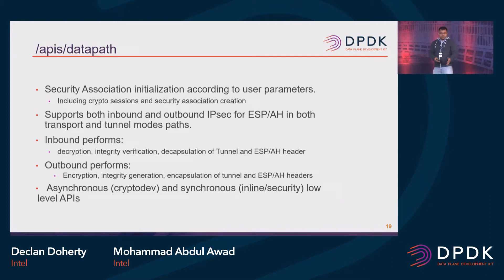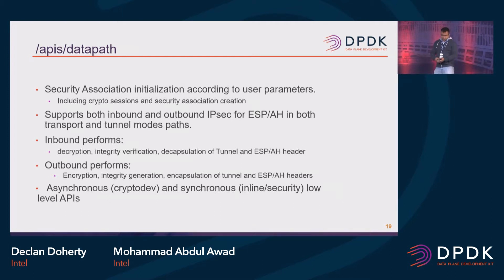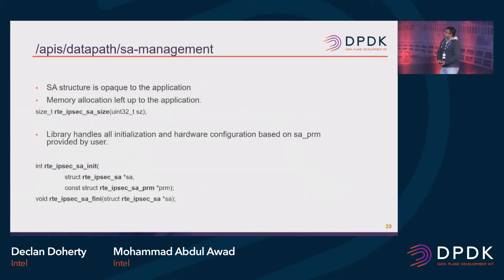In the data path, at the SA-level API, we categorize them: for look-aside crypto we call it an asynchronous API, and then also a synchronous API for the inline IPSec models. For this SA-level API we have basically two parts: the control path APIs, which is the SA management-level API. For an application to use this, we have the RTE IPSec SA structure, which is completely up to the application - it will manage all the memory allocation, the library doesn't do that.